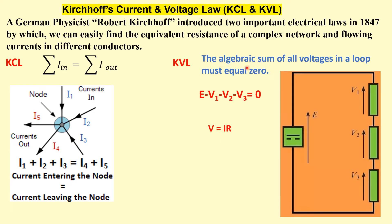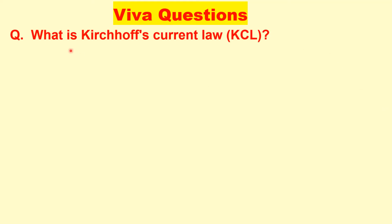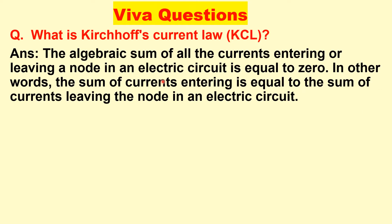Now I will discuss the important viva questions. The first question is: what is Kirchhoff's current law, KCL? The algebraic sum of all the currents entering or leaving a node in an electric circuit is equal to zero, or we can say that the sum of currents entering is equal to the sum of currents leaving at the node.